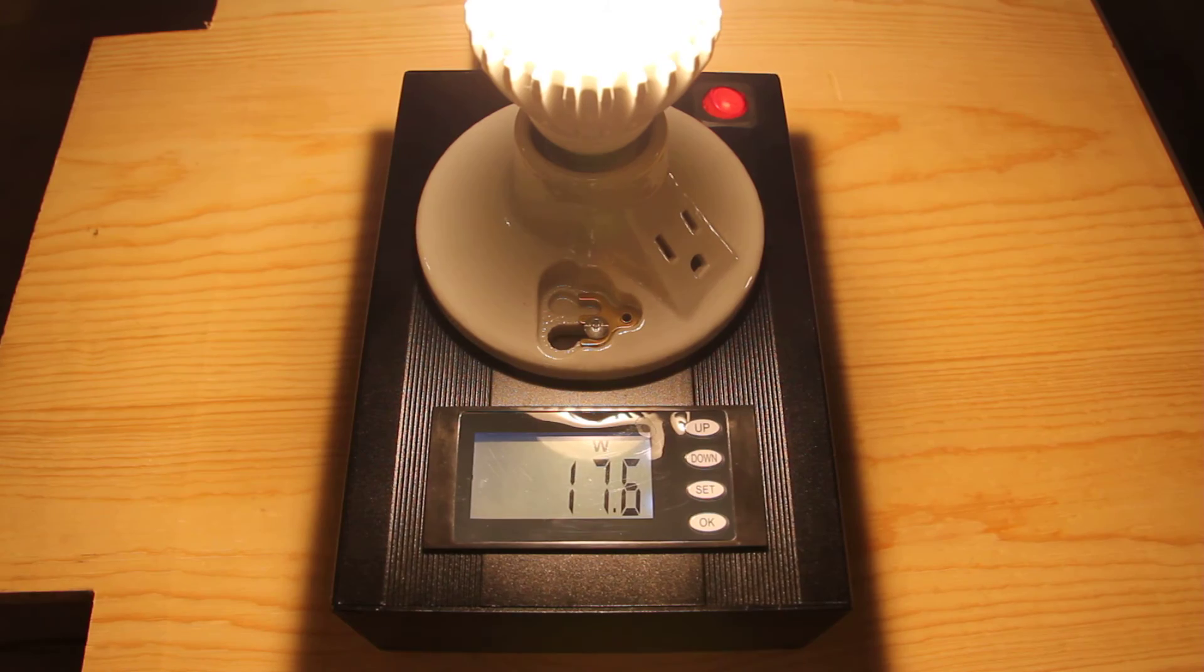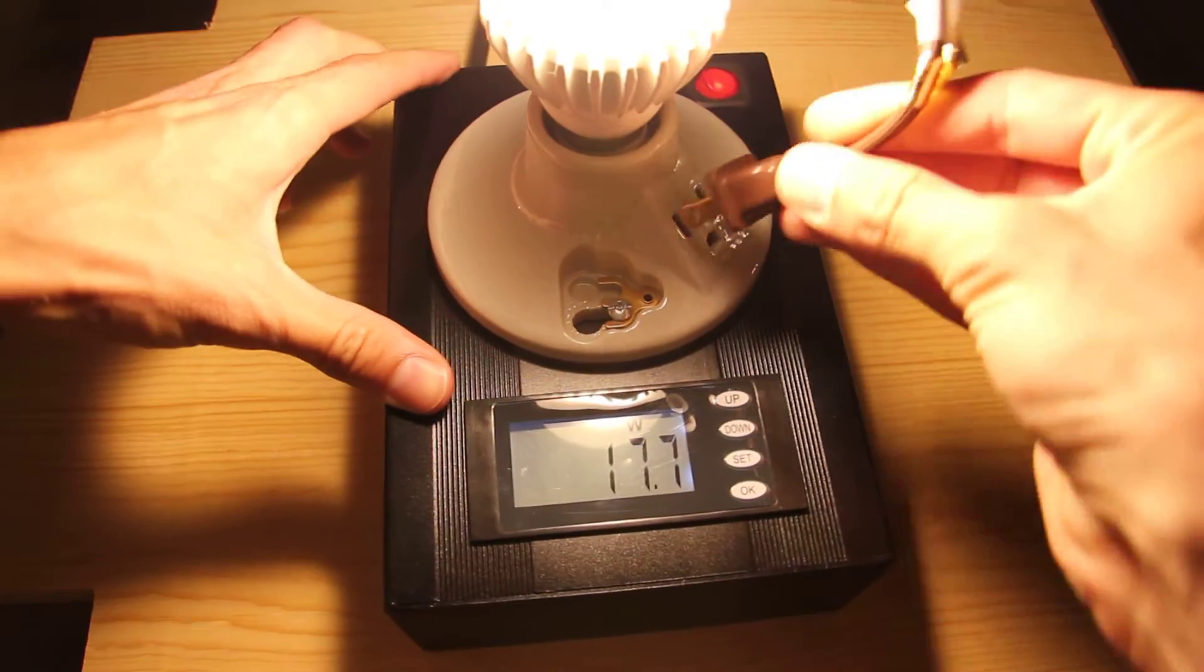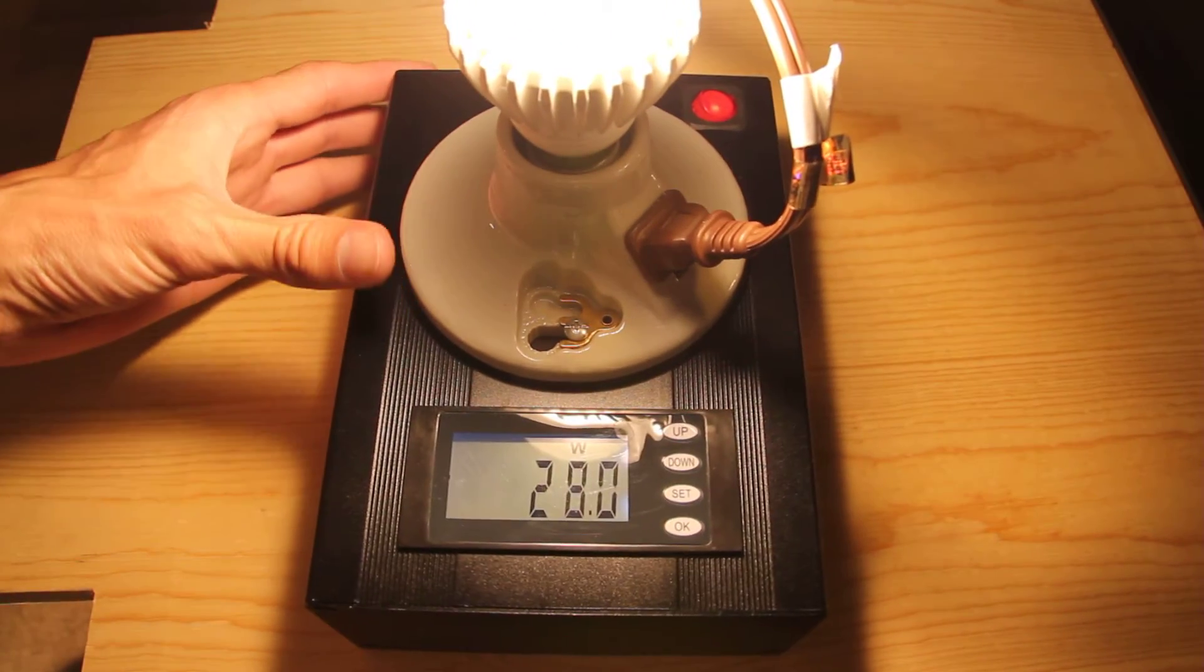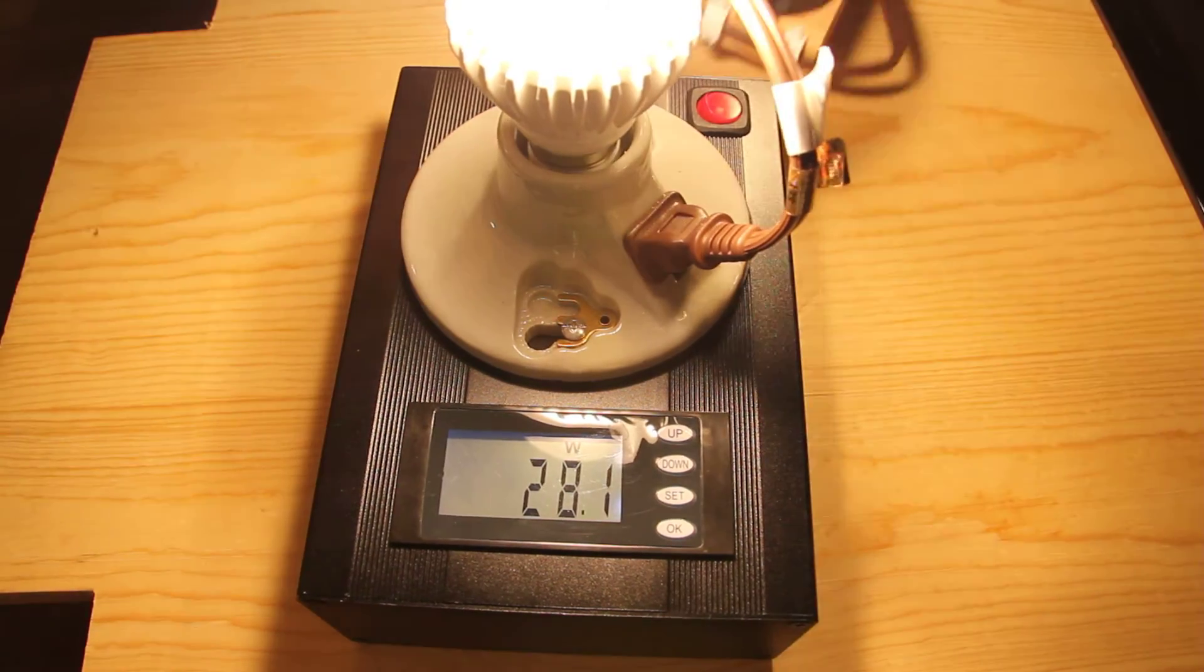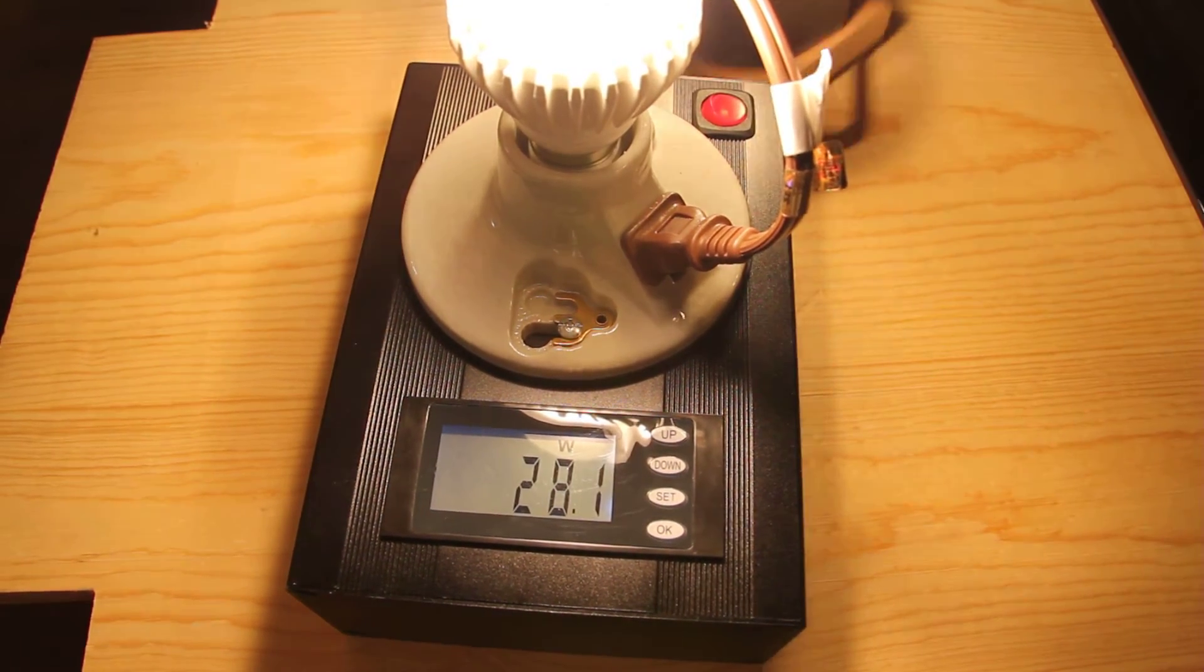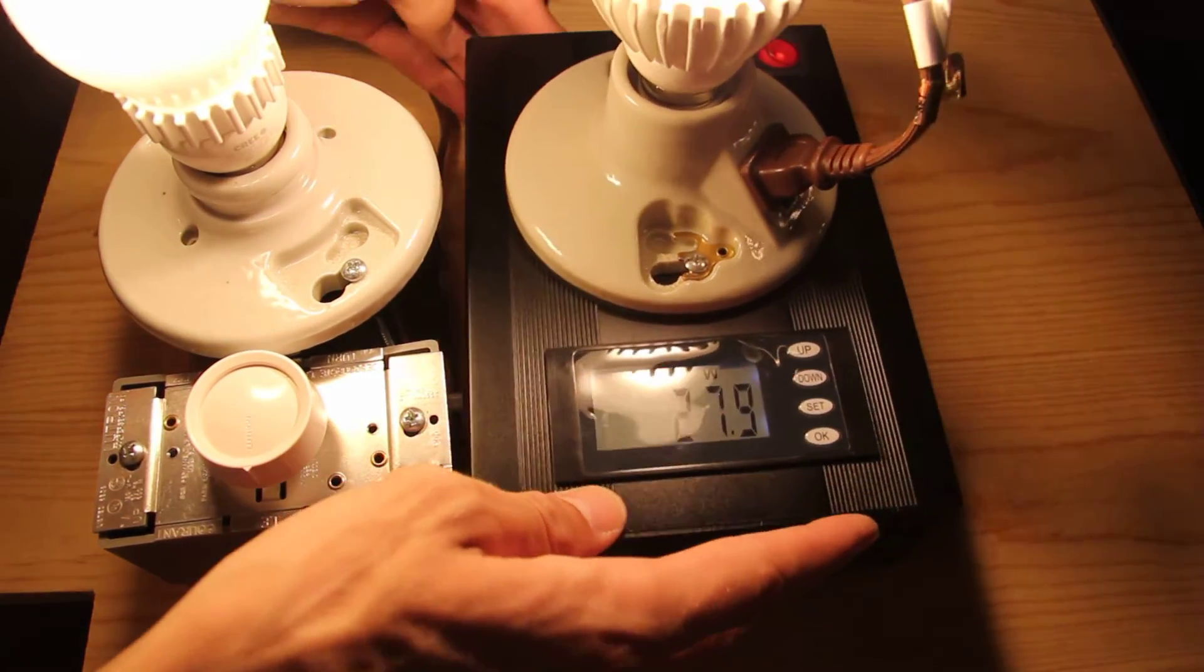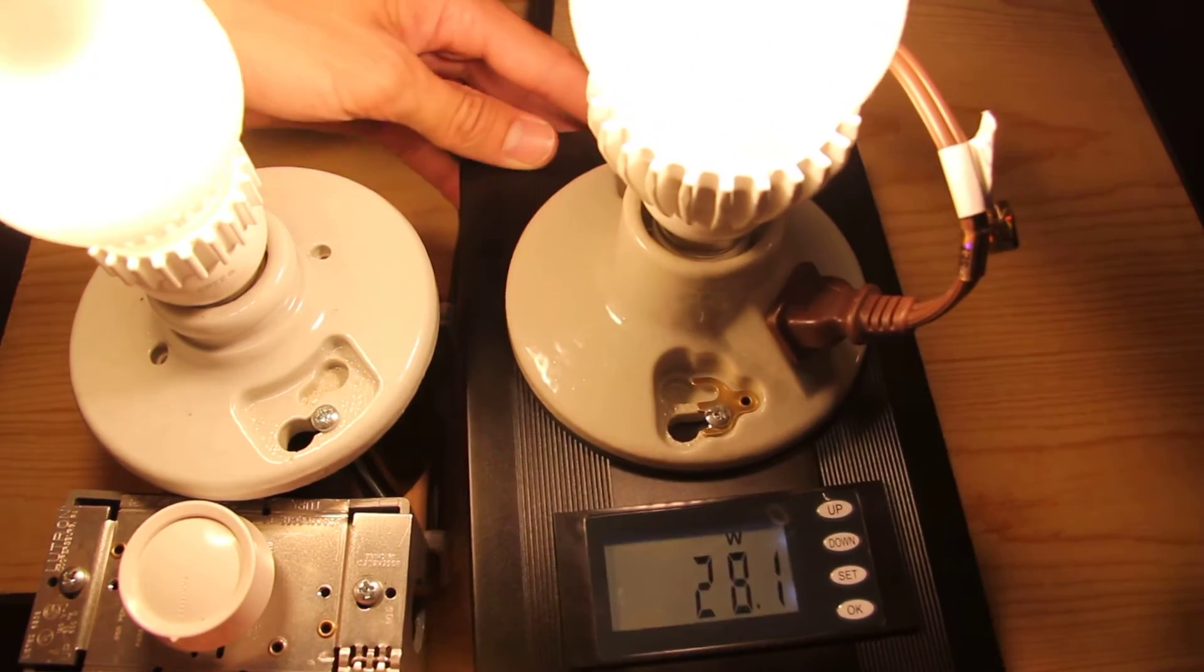So the next thing I'll do here is I'll plug in this cord here. And now it's gone up to 28 watts because what I have is my dimmer box that I made a few years ago. And I have a 60 watt equivalent Cree bulb on that.